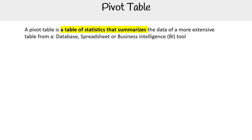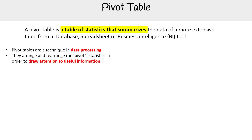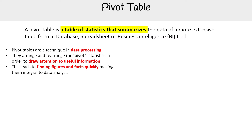A pivot table is a table of statistics that summarizes the data of more extensive tables from a database, spreadsheet, or business intelligence tool. Pivot tables are a technique in data processing — they arrange or rearrange statistics in order to draw attention to useful information, leading to finding figures and facts quickly, making them integral to data analysis.